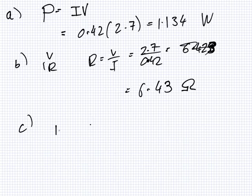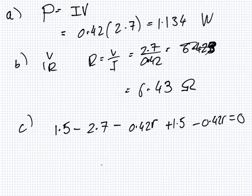Right, so that's 1.5 minus 2.7 minus 0.42r plus 1.5 minus 0.42r equals zero. Isn't it? Oh yeah. I'm starting at 1.5 and then minus 2.7 minus 0.42r plus 1.5 minus 0.42r.